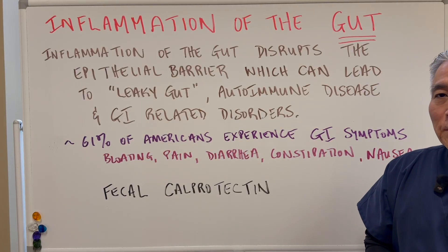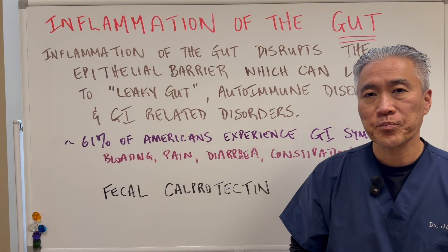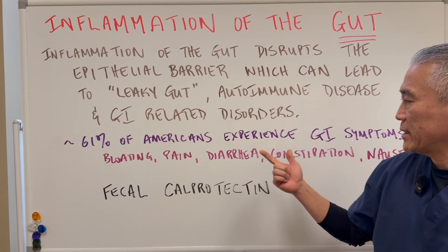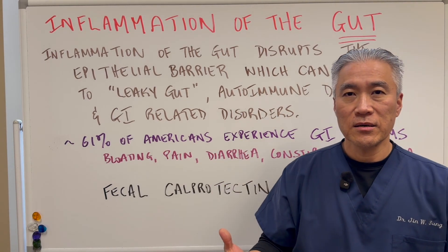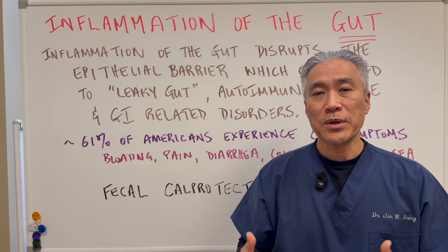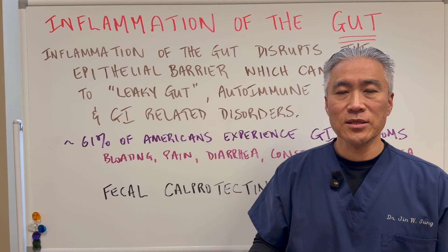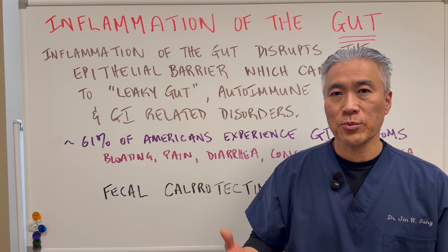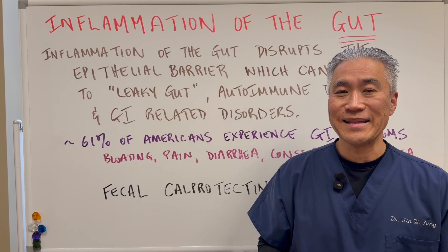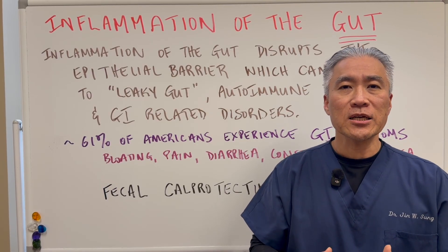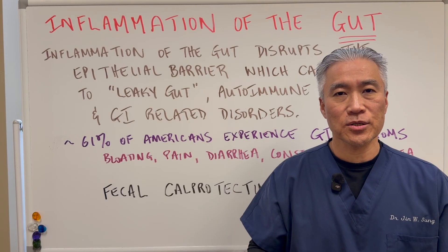Approximately 61% of Americans experience GI symptoms. This can be bloating, pain, diarrhea, constipation, nausea. But it could be related to GERD or reflux disease, it could be related to SIBO or small intestinal bacterial overgrowth, it could be related to food allergies — it can be related to a whole host of different things.